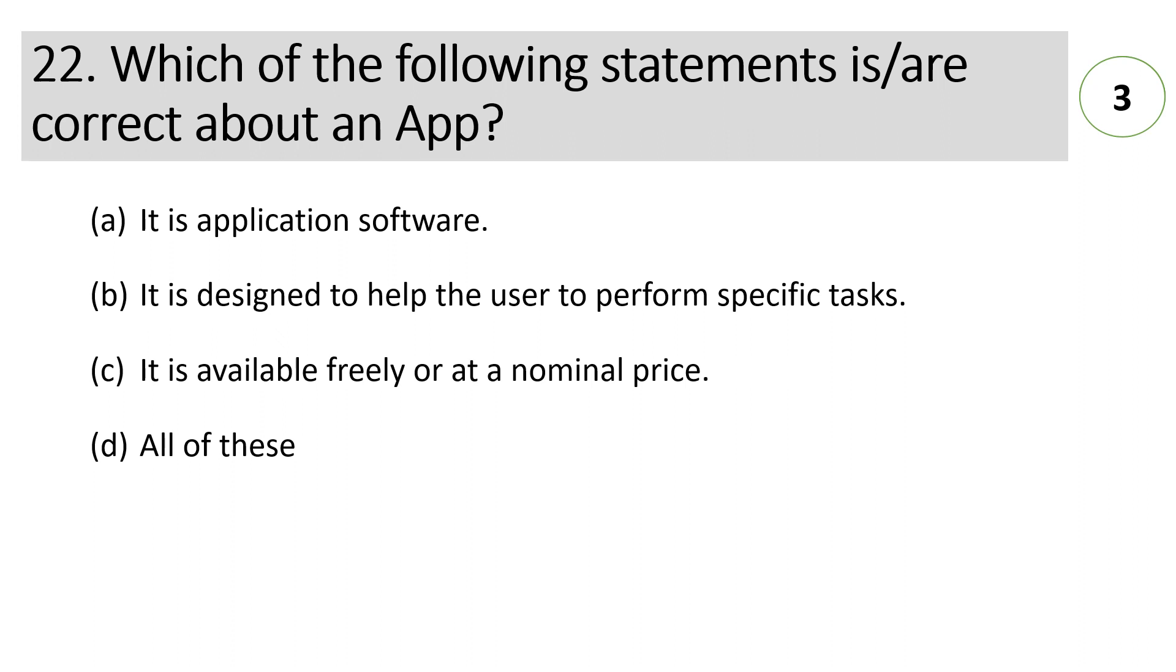Which of the following statements is or are correct about an app? A. it is an application software, B. it is designed to help the user to perform specific task, C. it is available freely or at a nominal price, D. all of these. Answer is D. all of these.